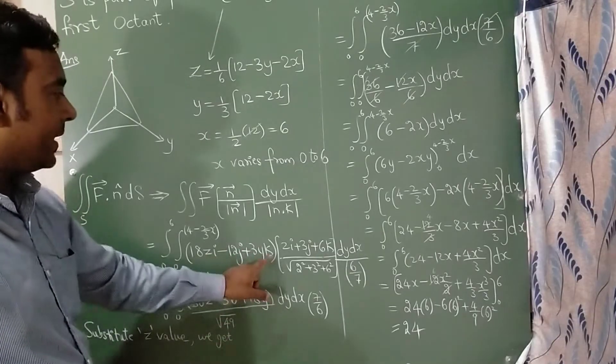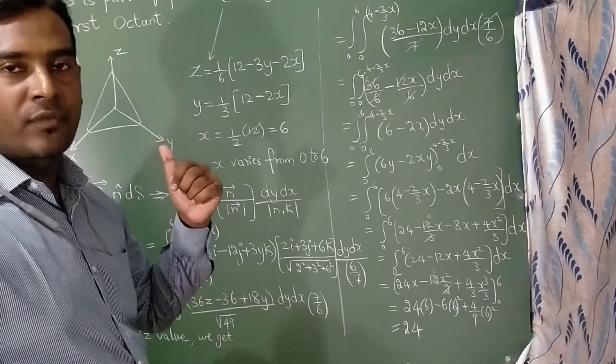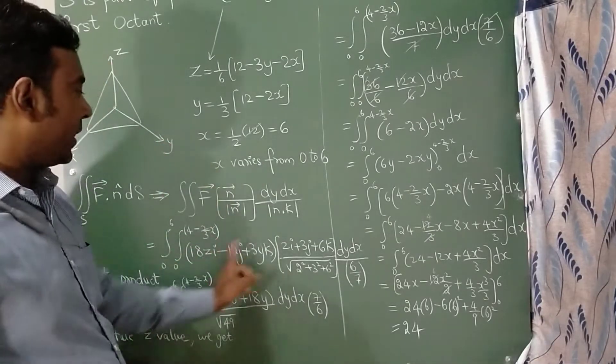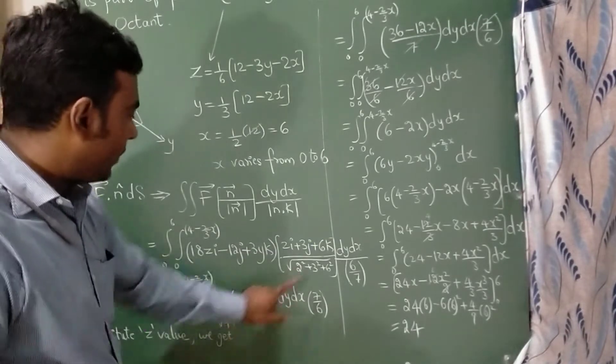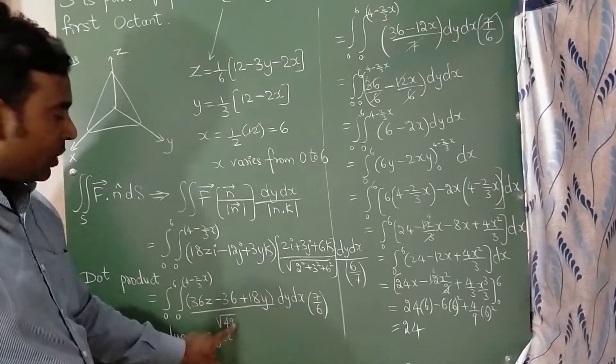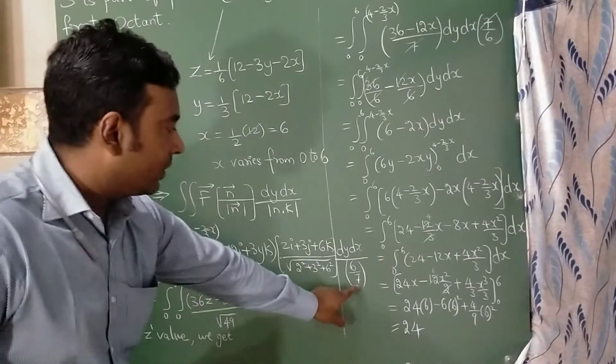Now you should not write i, j, k. Since in the lower classes you have studied vector algebra, dot product is multiplying a and b. Now this will become square root of 49, so square root of 49 is 7. That I have written here.